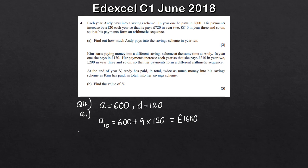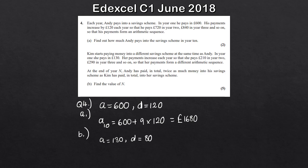Part B is a 5-mark question. Kim starts at the same time as Andy. In year 1 she pays in £130, £210 in year 2, £290 in year 3, so her common difference D is 80. We're told that at the end of year N, Andy has paid in total twice as much as Kim. We need to find N by working out the sum after N years for both Andy and Kim.